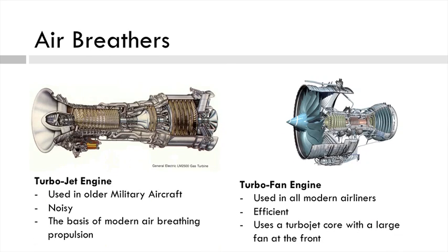The turbojet engine is mostly used in older military aircraft, not so much in modern aircraft. It is the basis of all modern air breathing propulsion, but it's quite noisy and less efficient. The engine has an inlet, then a compressor, a combustor, a turbine, and an exit nozzle. It generates thrust by taking in air, compressing it, adding fuel and heat, taking some energy out to run the compressor, and then firing very fast gas out the back.